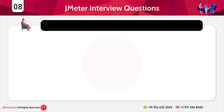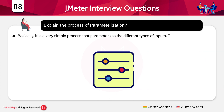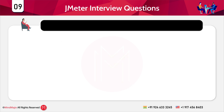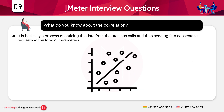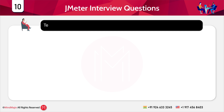The next question is: explain the process of parameterization. It is a very simple process that parameterizes different types of inputs, which is helpful in using distinct values for different users. The next question is: what do you know about correlation? It is basically a process of extracting data from previous calls and then sending it to consecutive requests in the form of parameters. It makes scripting easy and has cut a lot of complexity from the process of handling sessions.